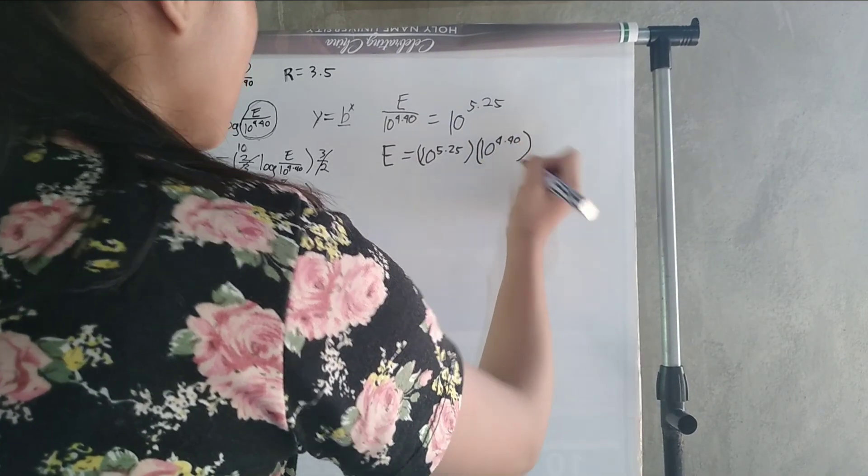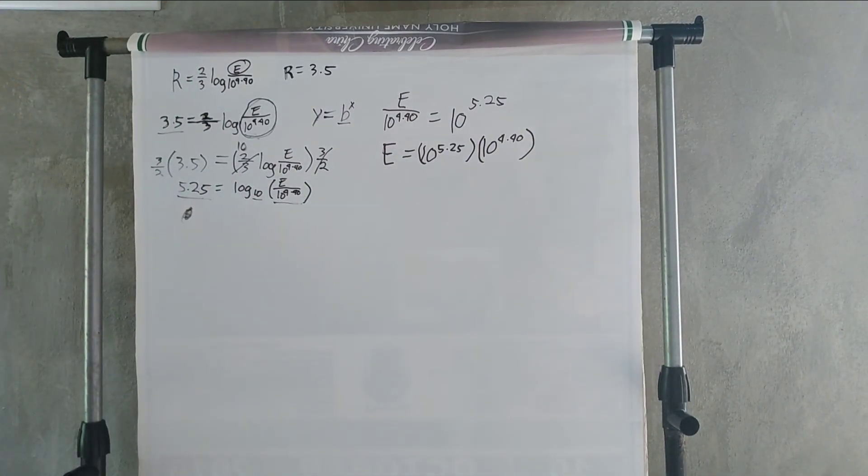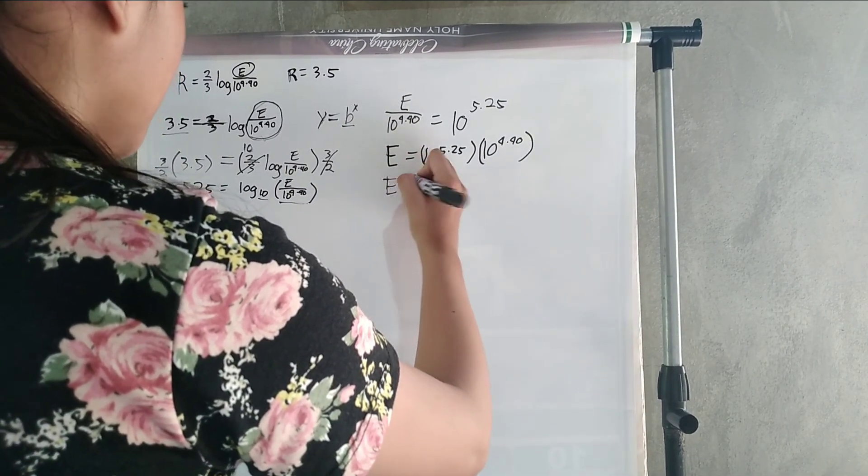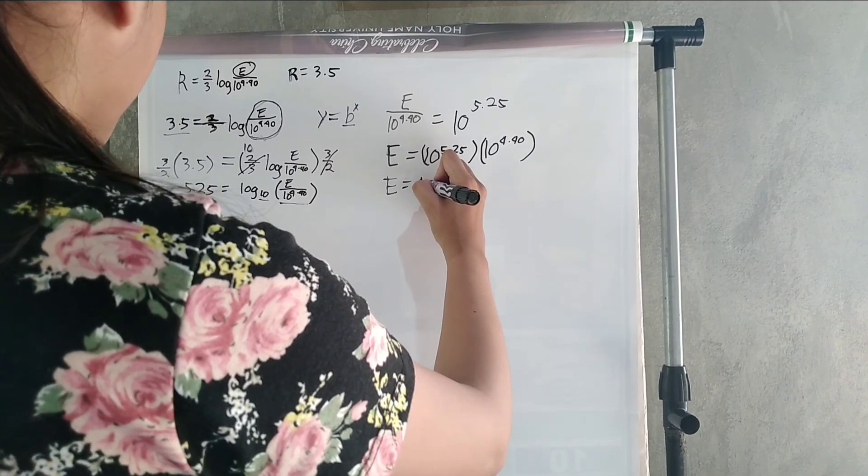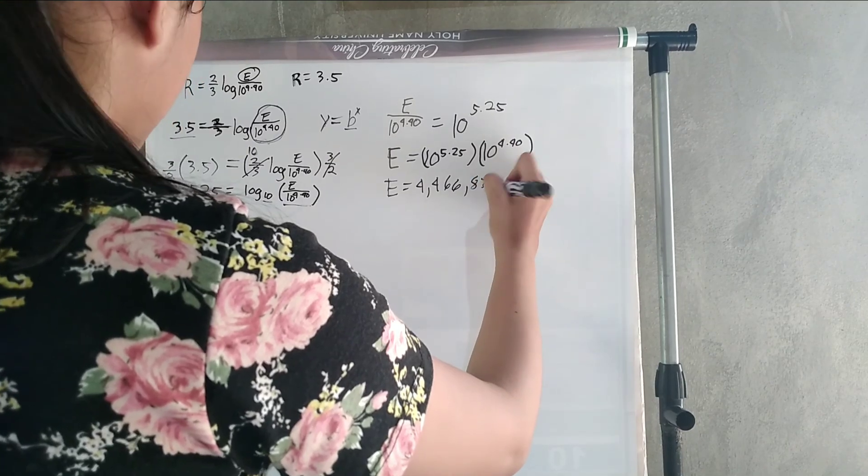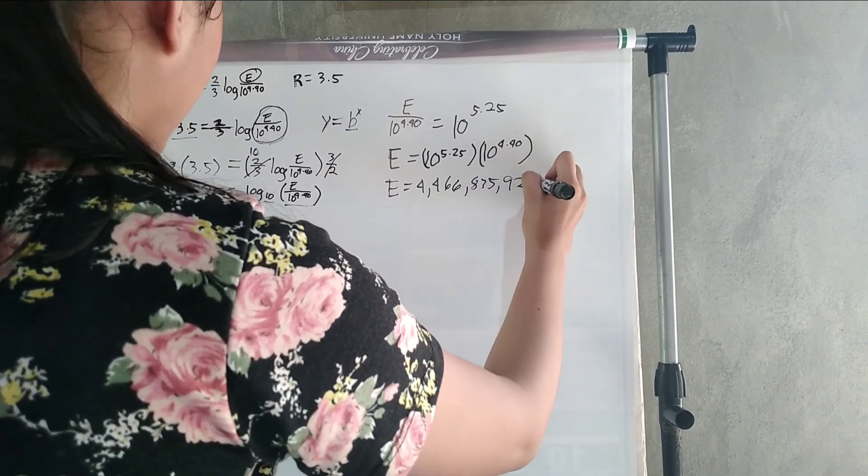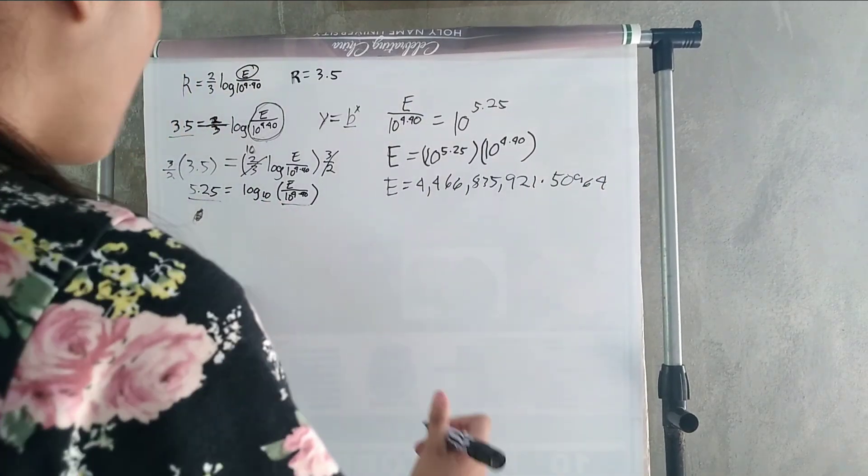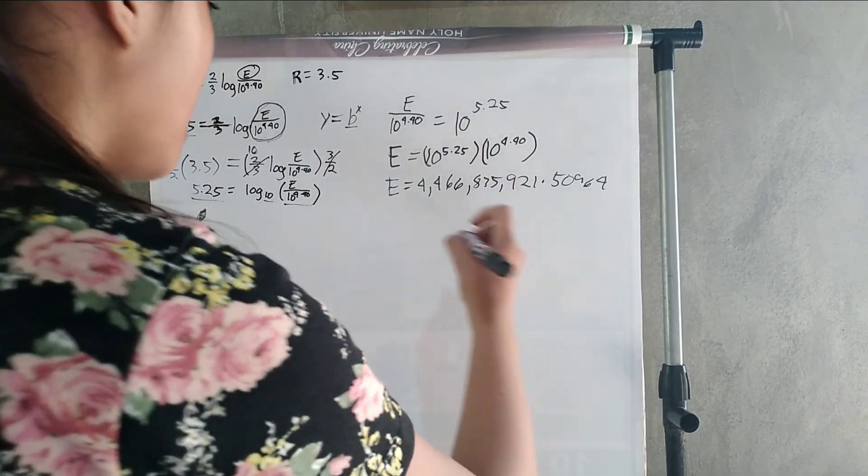We're going to use our calculator so we can compute this quickly. It's going to be E equals 4,466,835,921.50964. Or, I'm going to round it up, it's going to be 4,466,835,922.